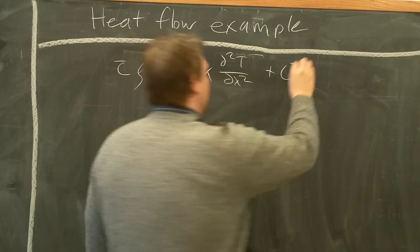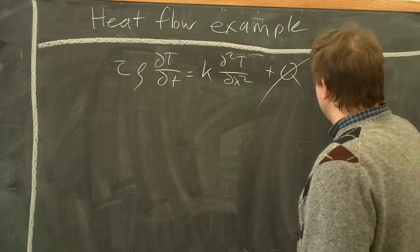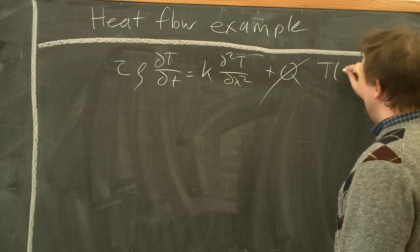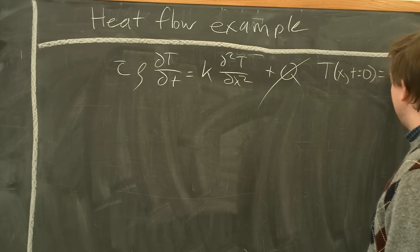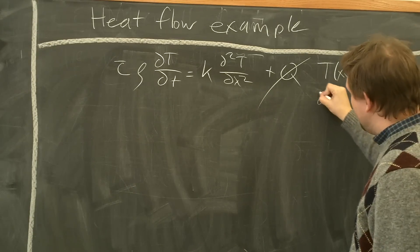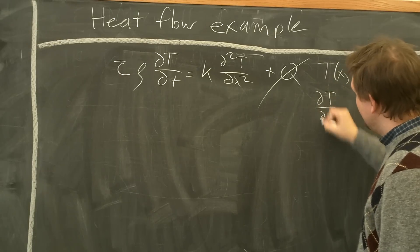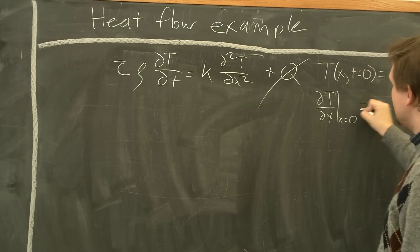We'll set Q equal to zero for this example unless we neglect it. Here's additional information with this problem. T at position X, time equals zero, equals F of X. The partial derivative, dT dx at position X equals zero, is equal to zero, meaning no heat is entering or leaving at that position in space.